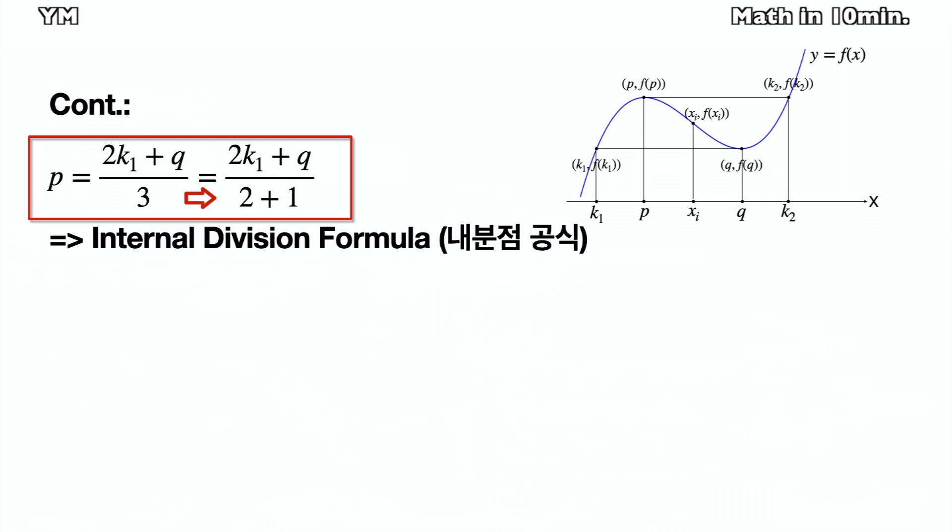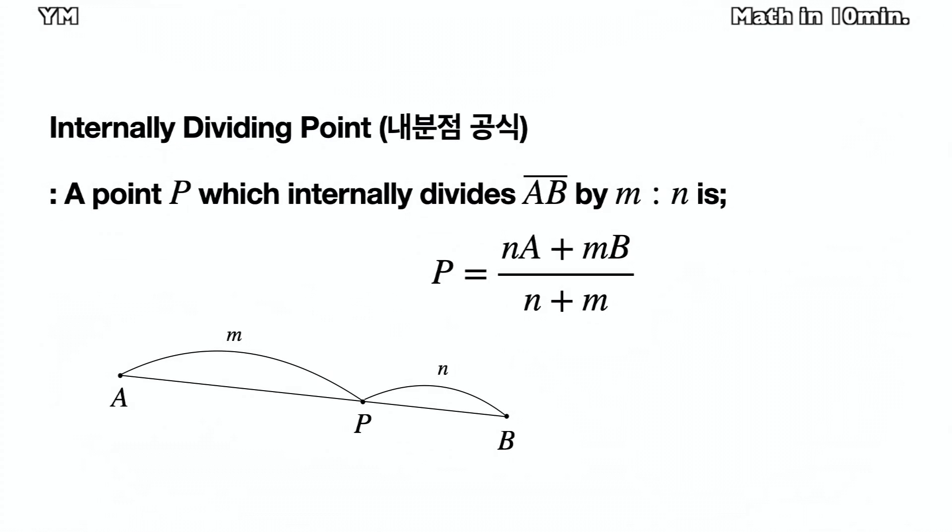Now, let's change the denominator of p to 2 plus 1. Can you see that this is a form of the internal division formula? To shortly explain about the internally dividing point, a point p which internally divides line a, b into m to n is (na + mb) divided by (n + m). Now let's go back to the last slide.